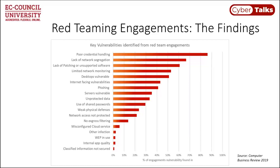On top of red team activity we should add purple team activity — for example, tabletop exercises building complex scenarios and discussing together the best strategy to block attacks. Looking at red team findings, many identified vulnerabilities are associated with the network environment: lack of network segregation, limited network monitoring, use of old protocols, and no aggressive filtering.